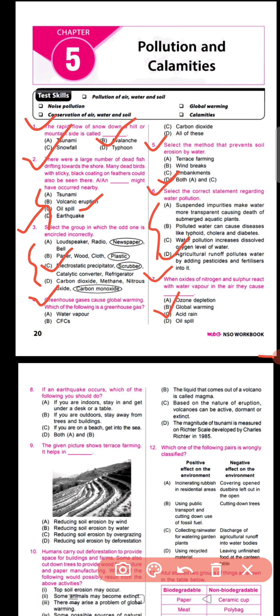Question number eight says: if an earthquake occurs, which of the following should you do? If you are indoors, stay in and get under a desk or table. If you are outdoors, stay away from trees and buildings. If you are on a beach, do not get into the sea. The correct answer is option D — both A and B.